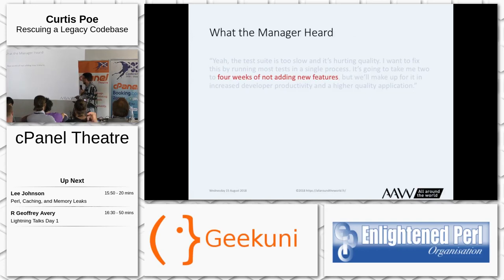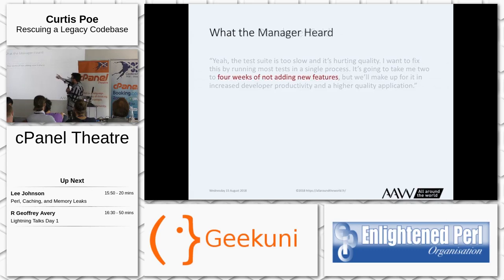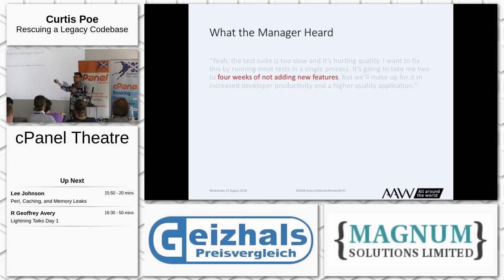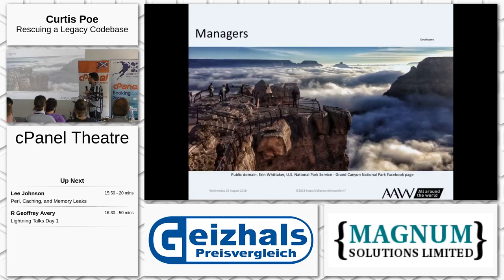To the developer, this looks like an extremely cogent argument. To the manager, the only real data they have is the timeline. When you said two to four weeks, they actually heard just the four weeks — because they know how developer estimates work, or they mentally double it to eight weeks. Nothing else was anything more than subjective opinion. There wasn't anything to quantify. When you're on the management side, you have to assess risk and reward.